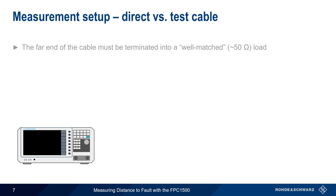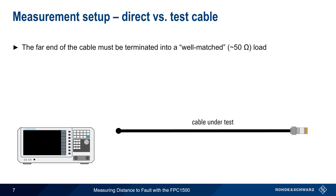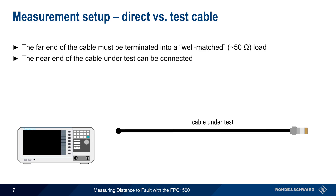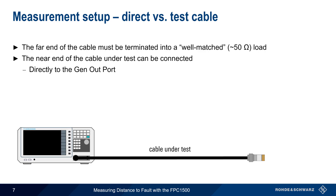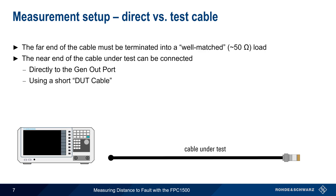For distance to fault measurements, the far end of the cable under test must be terminated into a well-matched, or roughly 50 ohm load. This load may be a CAL standard, a dummy load, or an antenna that's resonant at the measurement frequency. Erroneous distance to fault measurements are often caused by a failure to terminate the far end of the cable. The near end of the cable can be connected directly to the FPC's GEN-OUT port, or the cable can be connected using a short, high-quality DUT, or device under test cable.